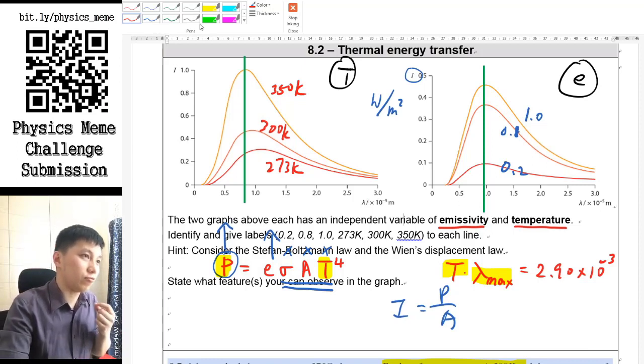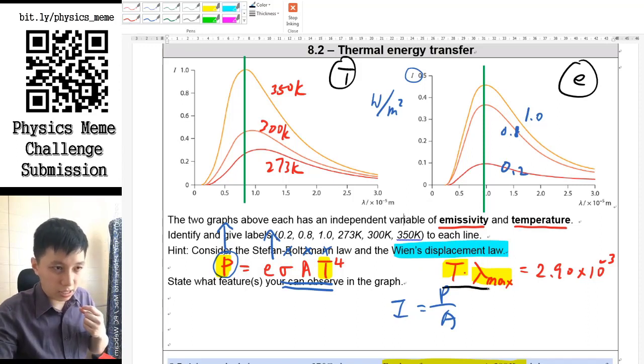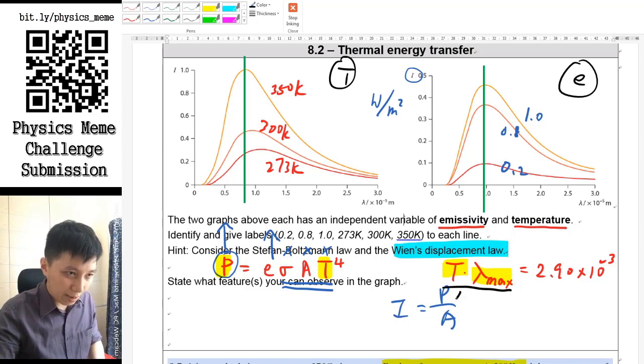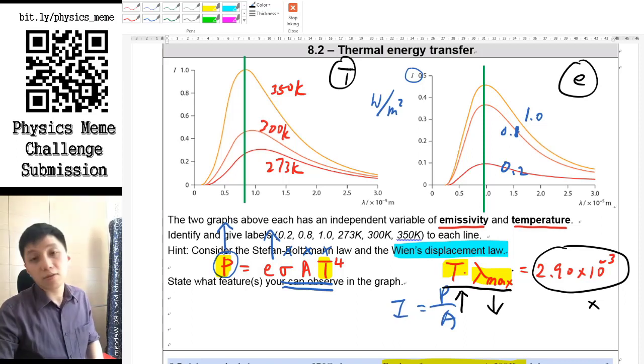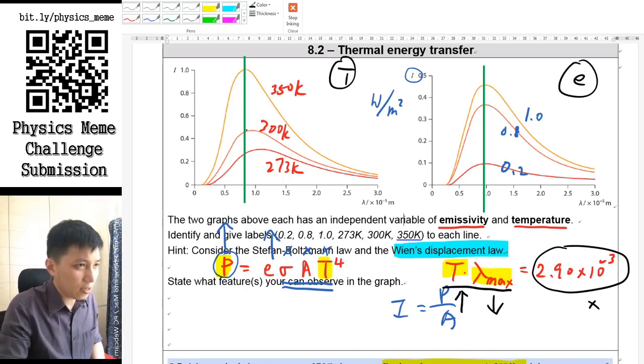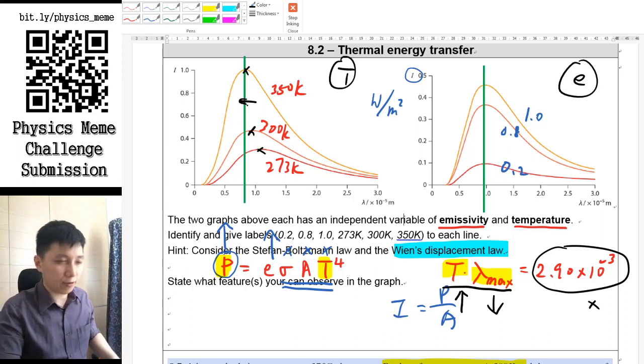You can do one more thing to verify your answer, and that is to use Wien's displacement law. T × λ_max equals a constant. If temperature increases while keeping the right-hand side as a constant, then λ would be smaller. If you are increasing the temperature, the peak will be towards the left. That is exactly what we observe as well.